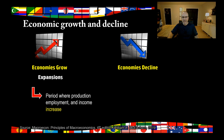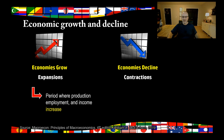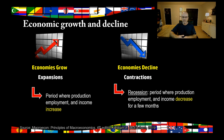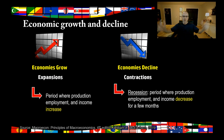But economies also decline — these are called contractions. We have two terms to characterize contractions depending on how long they last. A recession, which is the term we use most often, is a period when production, employment, and income decrease for a period usually no more than a few months to a year. Those happen frequently — we call them economic cycles. We have periods of expansion and periods of contraction, and hopefully over time you're getting more expansionary growth than declines and your economy is growing.